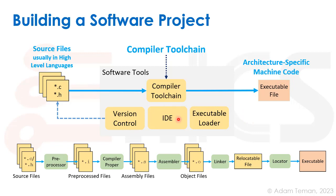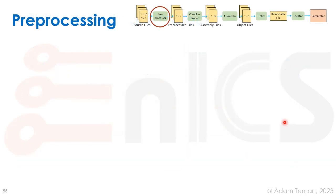We also have tools like an IDE for development and version control for managing files. There may also be an executable loader used on more complicated machines. The compiler toolchain takes source files through a preprocessor, then a compiler, assembler, linker, and locator, until we finally get the executable. That's what we'll be discussing in this final section of the lecture.